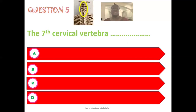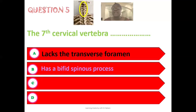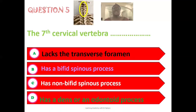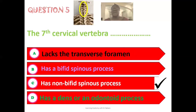The fifth question: which statement is true of the seventh cervical vertebra? Options are: it lacks transverse foramina, it has a bifid spinous process, it has a non-bifid spinous process, or it has a dens or odontoid process. The correct answer is that the seventh cervical vertebra has a non-bifid spinous process. C7 is one of the atypical cervical vertebrae, and the feature that separates it from the others is its non-bifid spinous process.